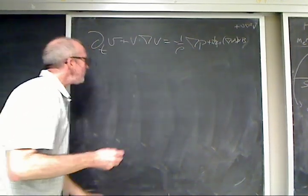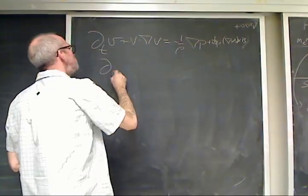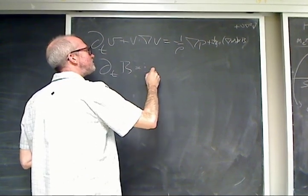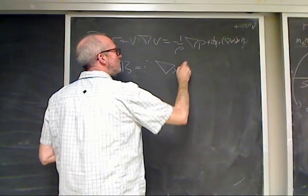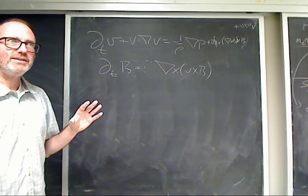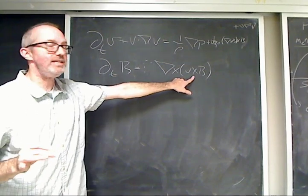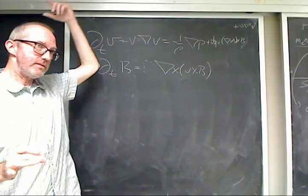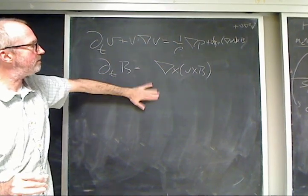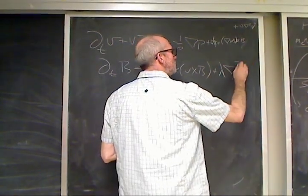Our induction equation — where the magnetic field comes from — is: ∂B/∂t = ∇×(V×B) + λ∇²B. I always have trouble remembering what goes in front because in Maxwell's equations there's a minus 1/c and an E term, but if you substitute for E the 1/c goes away, so there's nothing in front of the curl.